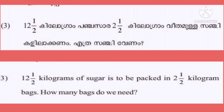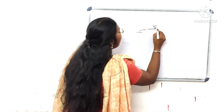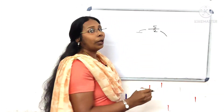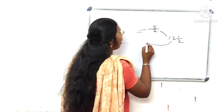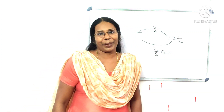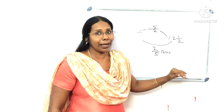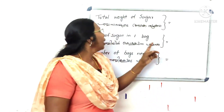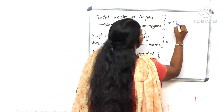12 and a half kilograms of sugar is to be packed in 2 and a half kilogram bags. How many bags do we need? Now if you tell me about the weight of sugar — how much? 15 kg.